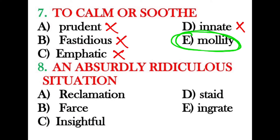Next: what is the one word for 'an absurdly ridiculous situation'? The correct answer is 'farce.' Reclamation, stately, and ingrate are all incorrect options. The B option, farce, is the correct answer.